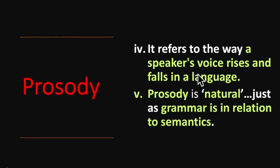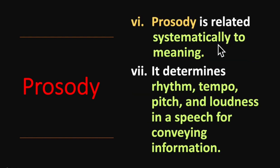A speaker in English does not speak in just one manner — we have sometimes a rising tone, sometimes a falling tone, and sometimes we put emphasis on particular words and phrases, because it gives a different meaning and expression. Prosody is natural, just as grammar is in relation to semantics. There is a deep connection between grammar and meaning; likewise, prosody is very natural to us. Our rising and falling tones keep happening spontaneously when we speak.